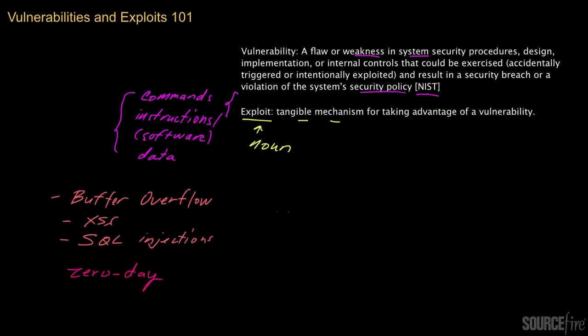In the last video, I introduced concepts like vulnerabilities, exploits, patches, zero days, and so on. In this video, I'd like to continue to dive deeper into some of these concepts. Once a vulnerability is known about publicly — say, a buffer overflow within a specific application — it's often assigned a CVE number. CVE stands for Common Vulnerabilities and Exposures. It's a number that acts as a common reference point or identifier, enabling security researchers and vendors to discuss and share information about vulnerabilities more easily.